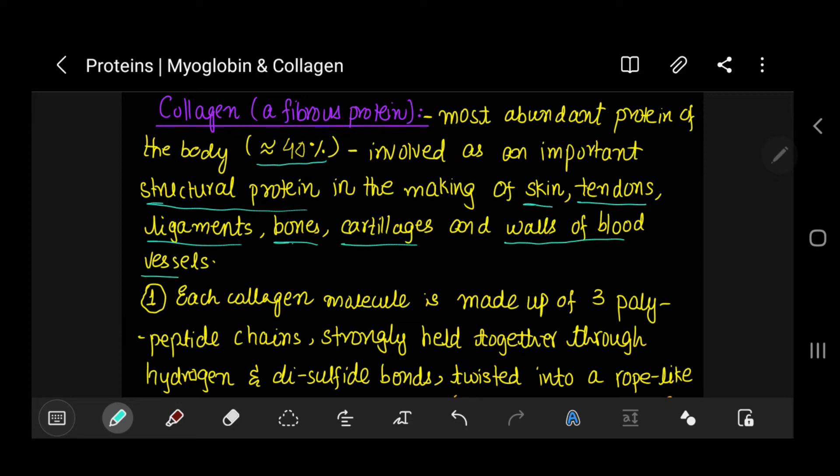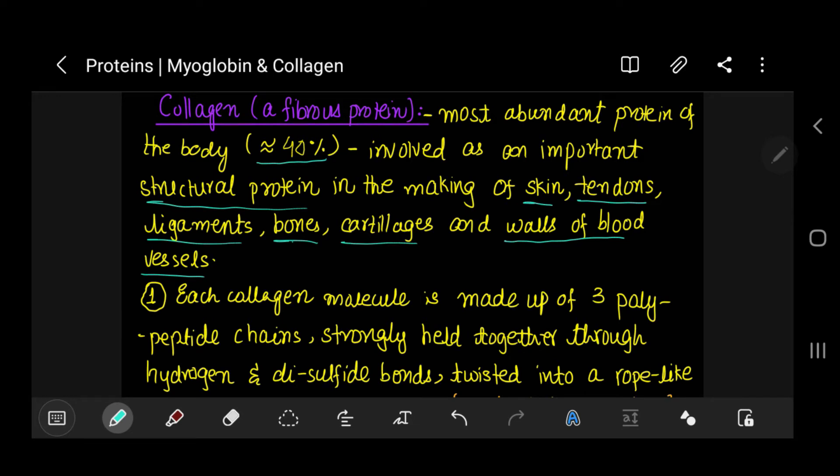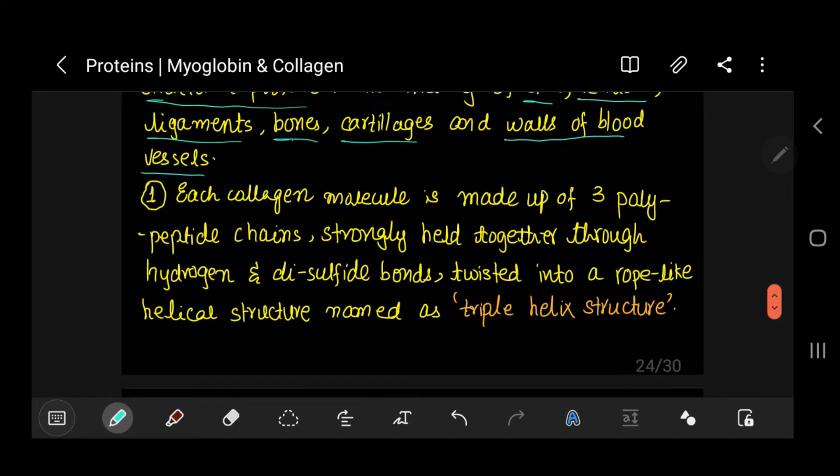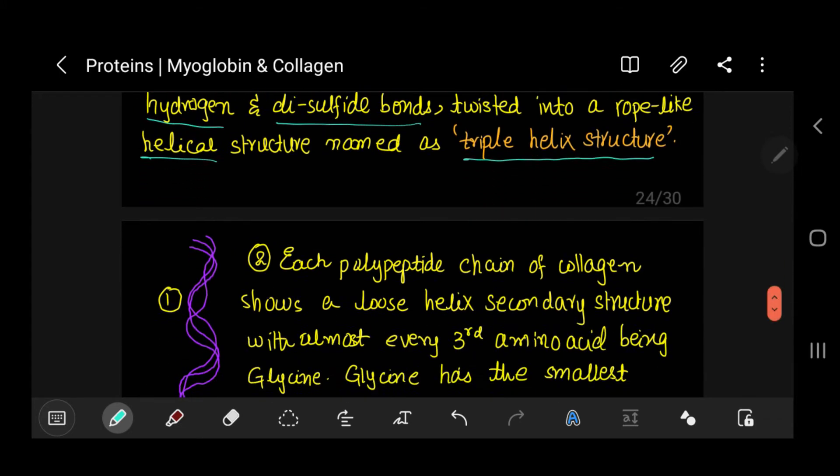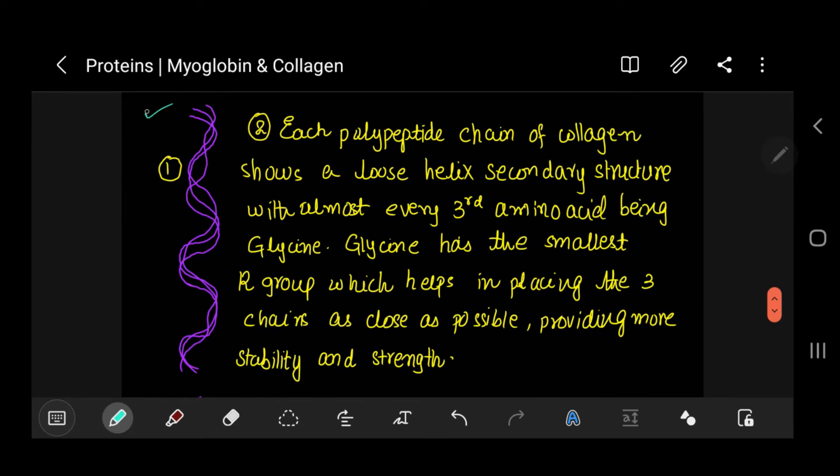Now let's see the structure of this collagen molecule. Each collagen molecule is made up of three polypeptide chains which are strongly held together through hydrogen and disulfide bonds, twisted into a rope-like helical structure named as triple helix structure. You can see three polypeptide chains twisted around like a rope through hydrogen and disulfide bonds into a triple helix structure.